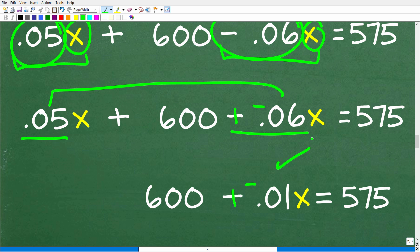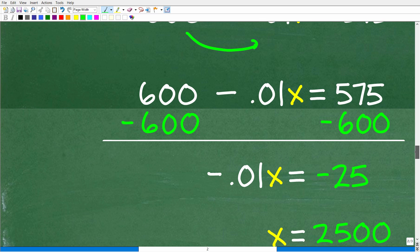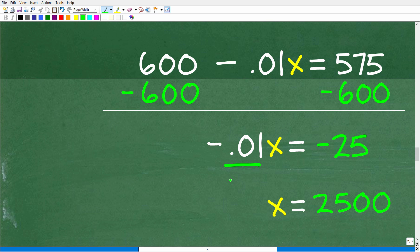All right, so we have all of our variable terms on the left-hand side. We've got to get this number over to the other side. So we're going to subtract 600 from both sides of the equation. And when we do that, we get negative 0.01x on the left. And then 575 minus 600 gives us negative 25. All right, so to solve for x, all we have to do is divide both sides of the equation by negative 0.01. So we have a negative divided by negative, which, of course, is a positive. So negative 25 divided by negative 0.01, again, use your calculator, we get 2,500. So x is equal to 2,500.